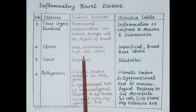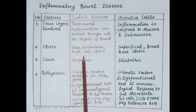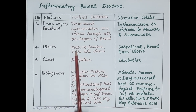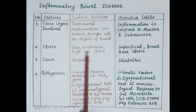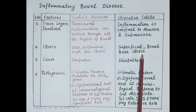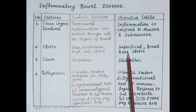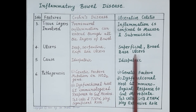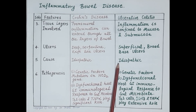Regarding ulcers: since Crohn's disease involves all four layers of the GIT — mucosa, submucosa, muscle layer, and serosa — the ulcers are deep, serpentine, long knife-like ulcers. In ulcerative colitis, since only the mucosa and submucosa are mostly involved, the ulcers are superficial, broad-based ulcers.